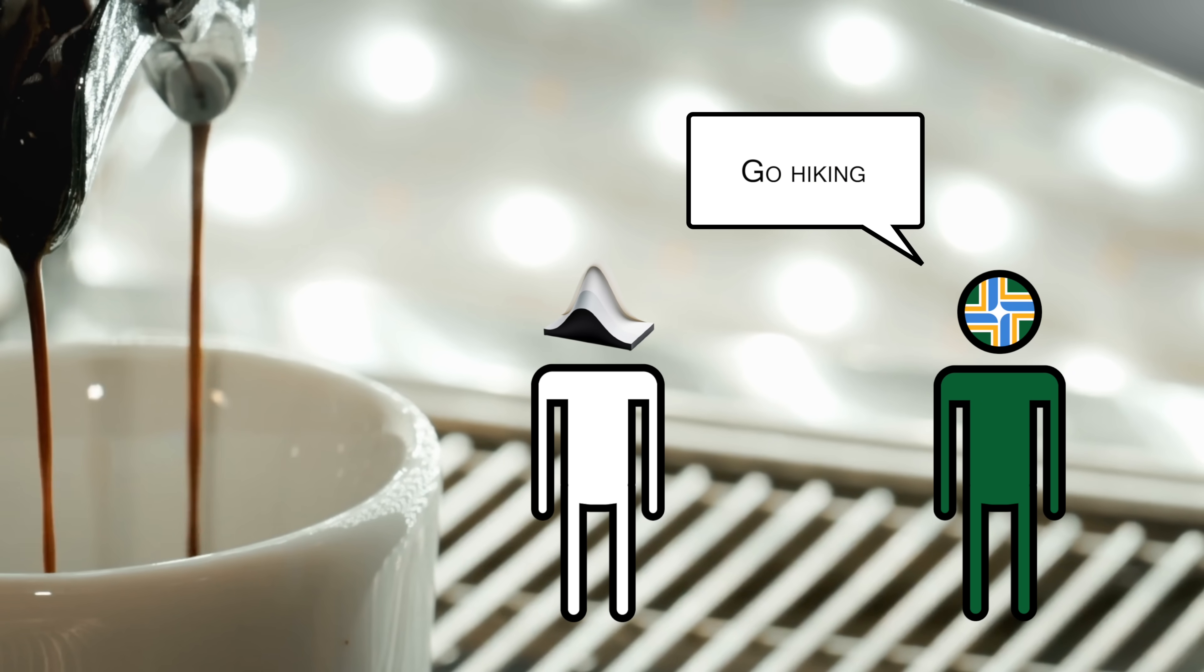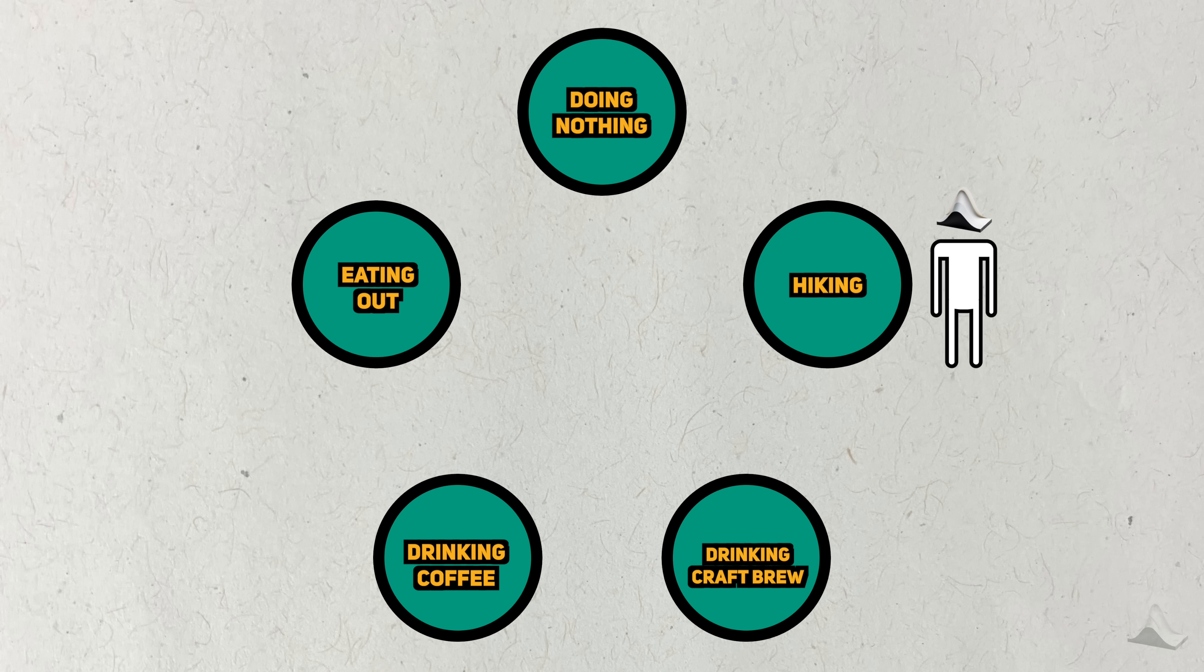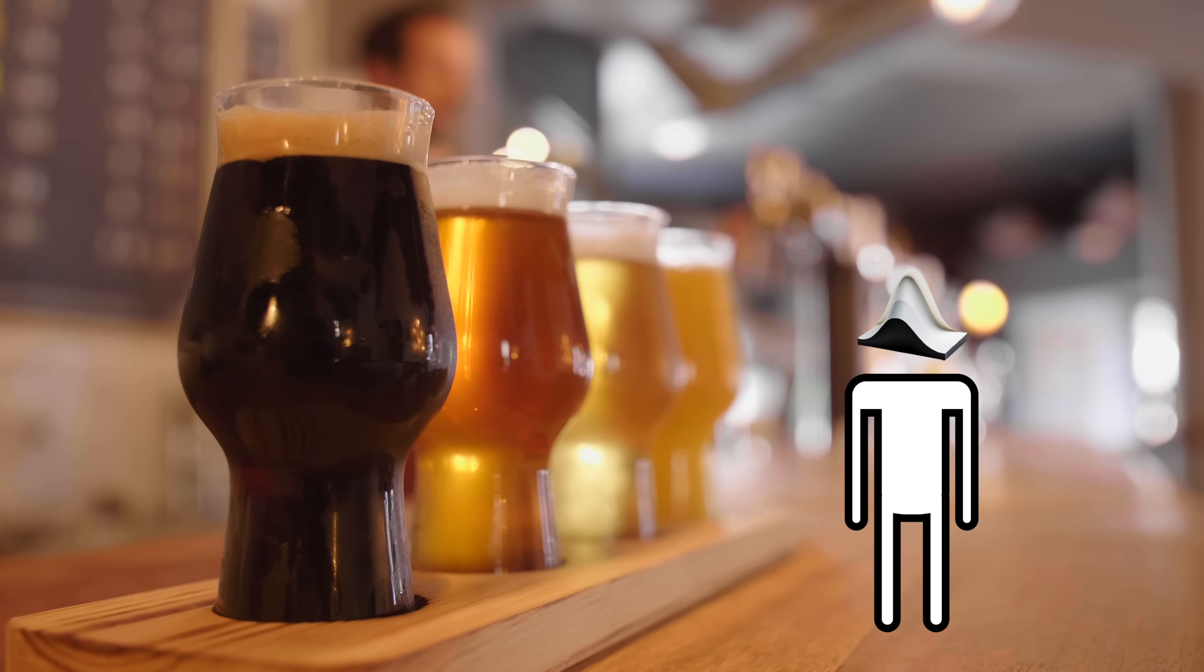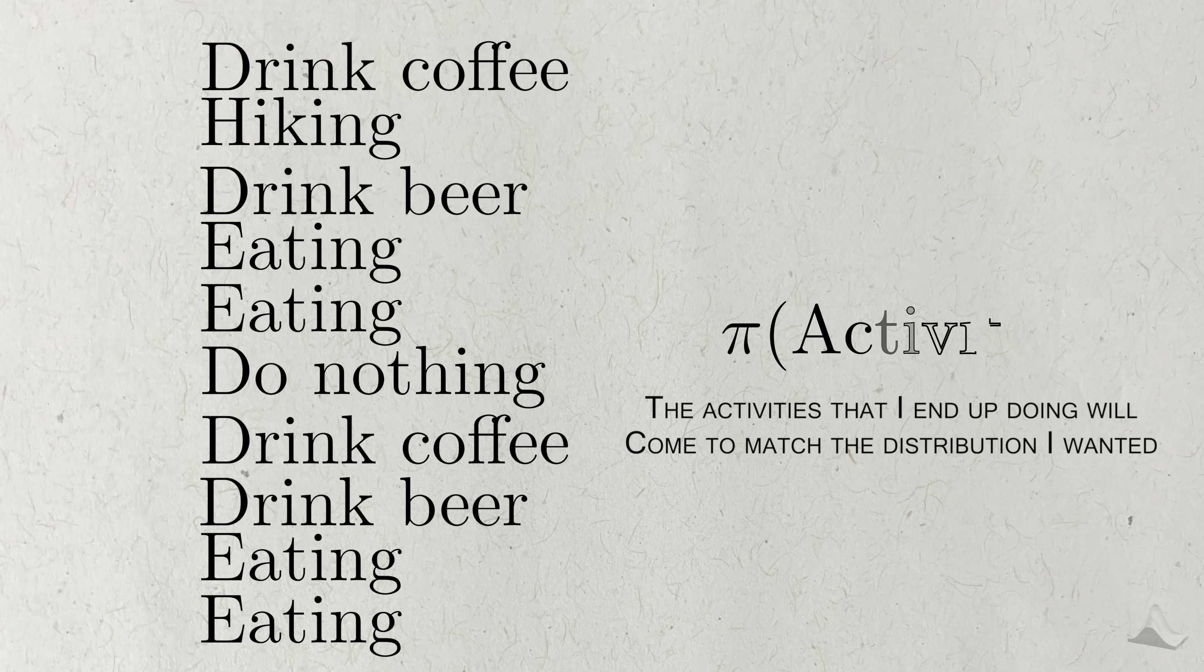No matter what the local tells me, I'm going to listen to their suggestion and do that activity for another hour or so. And from there, I repeat this process all over again, come up with a proposal, ask a local, and then obey what they tell me to do. And if I repeat this process for long enough, the Metropolis algorithm guarantees that the time I spent based on the local suggestions will come to closely resemble my target distribution.